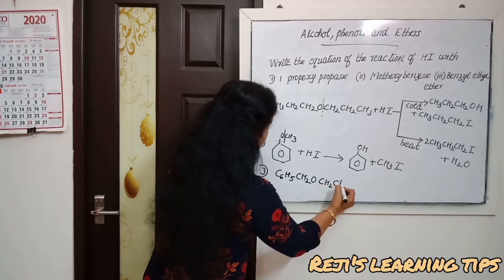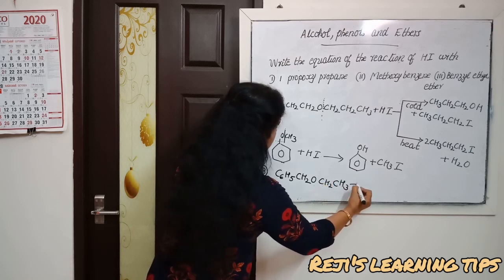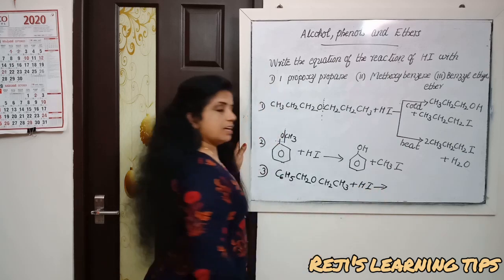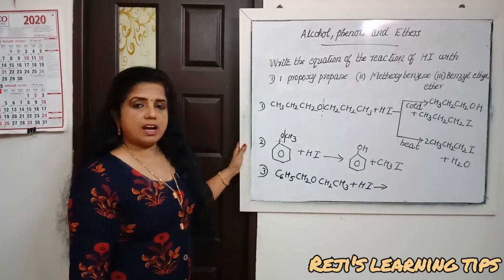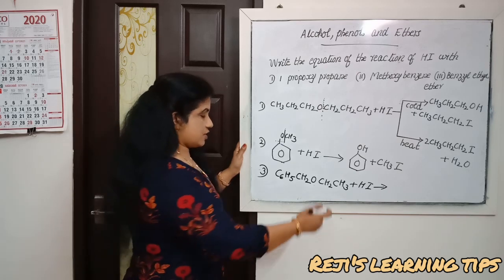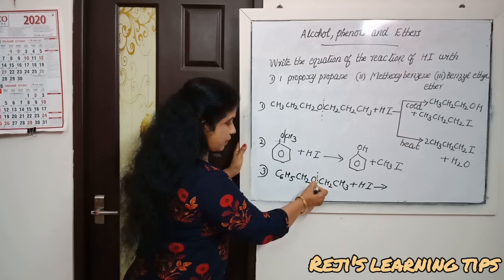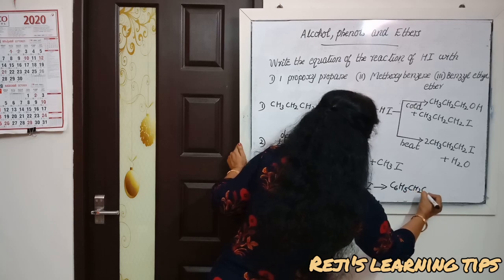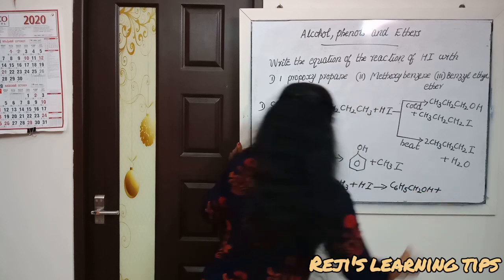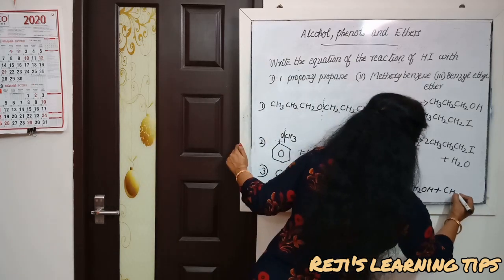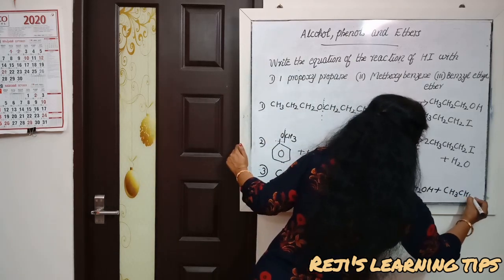Correct. Here the bond is breaking between benzyl and ethyl. We will get C6H5-CH2-OH plus CH3-CH2-I ethyl iodide.